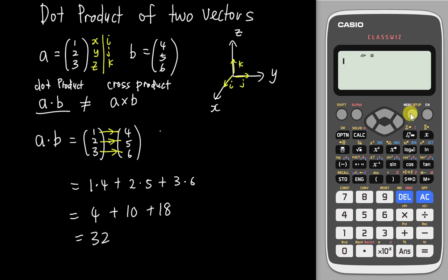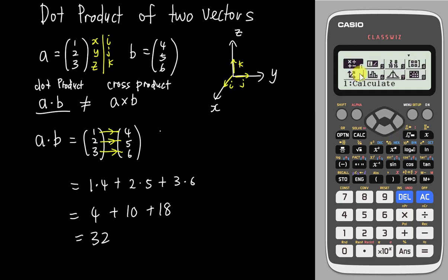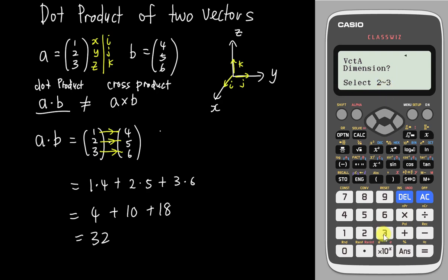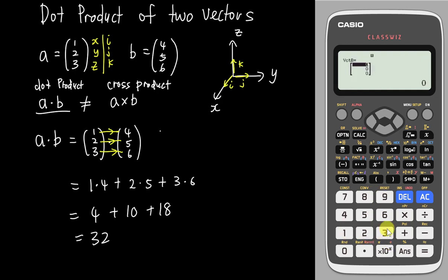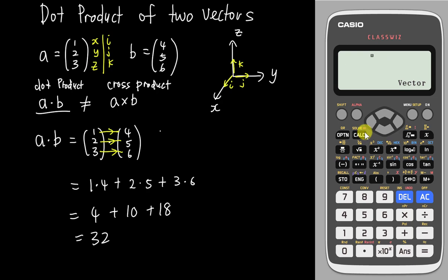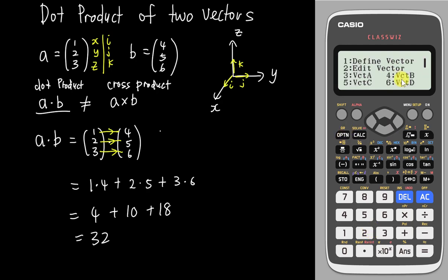If I want to do the dot product on the new Casio calculator, this is what I will do. I go into the menu and look for number 5, which is Vector. Then I want to define my vector — number 1, which is 3-dimension, so I tap 3. Then I insert 1, 2, 3. Then I want to define another vector B, so I go to option, define vector number 2, vector B, 3-dimension, and enter 4, 5, 6. Then I go to option for vector calculation, which is number 3. I go to option, select vector A which is number 3. You cannot type multiply — they are not the same. Then go to option, come down to the next menu to look for dot product, which is number 2. Then go to option for vector B, number 4. I tap Enter, and the calculator gives me 32.